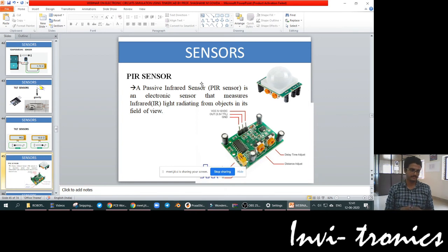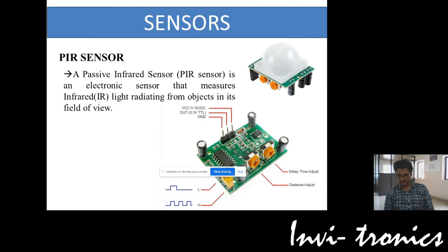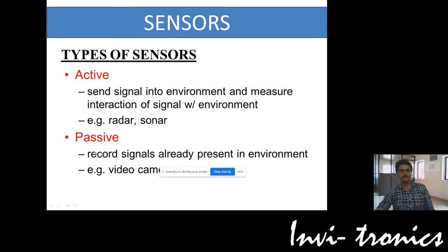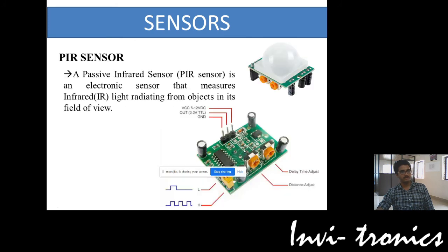We will see the PIR sensor. PIR sensor stands for Passive Infrared Sensor. In the name itself it is there — Passive Infrared. It is called passive because it records the signal already present in the environment. This sensor records only the infrared values — these infrared signals will be recorded by the Passive Infrared sensor.